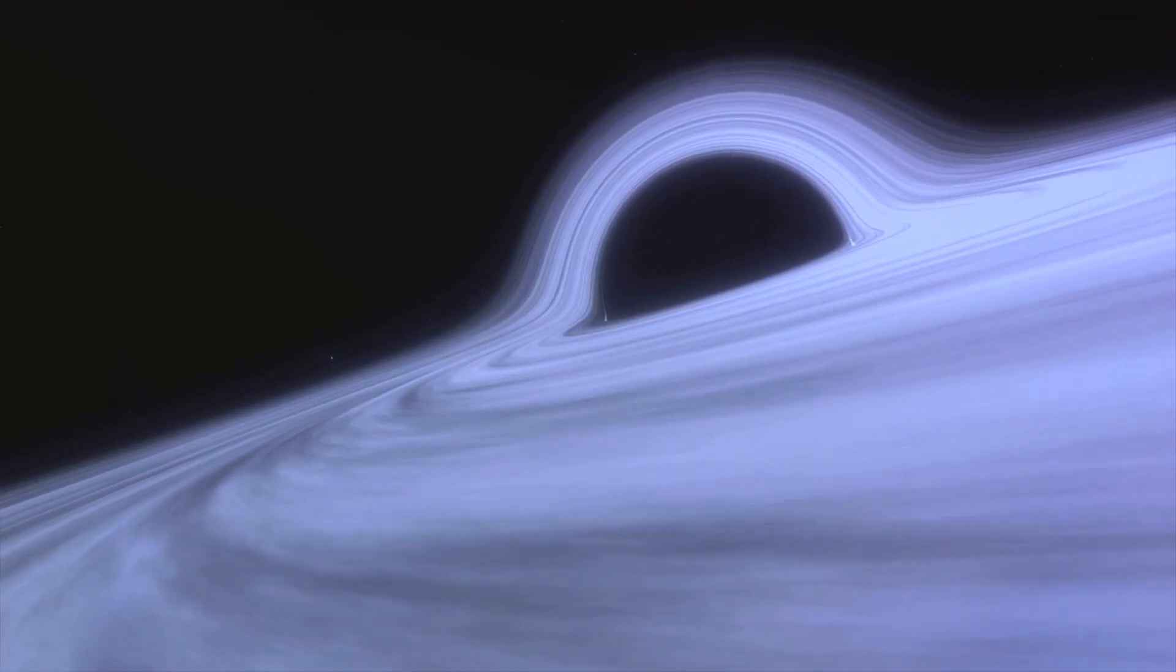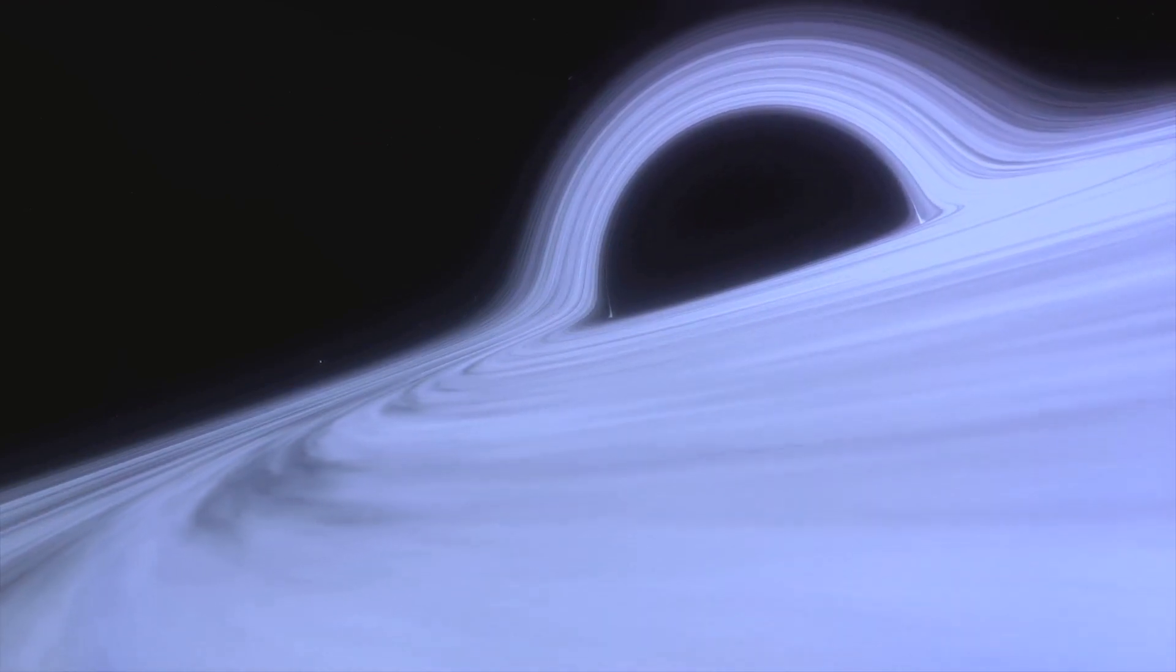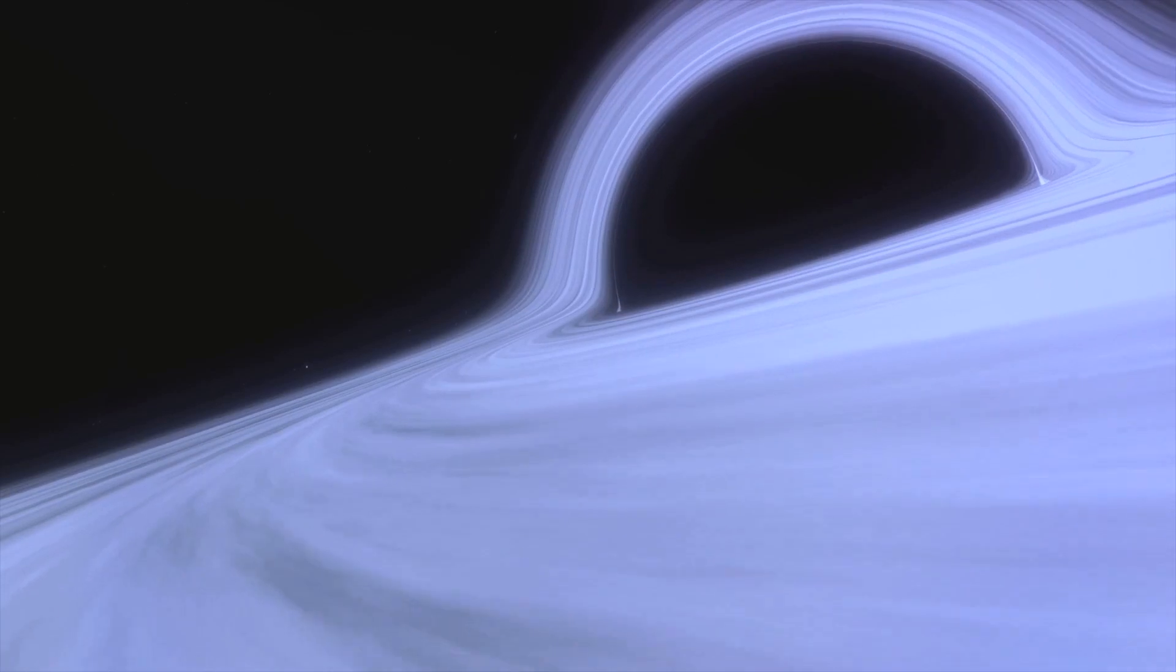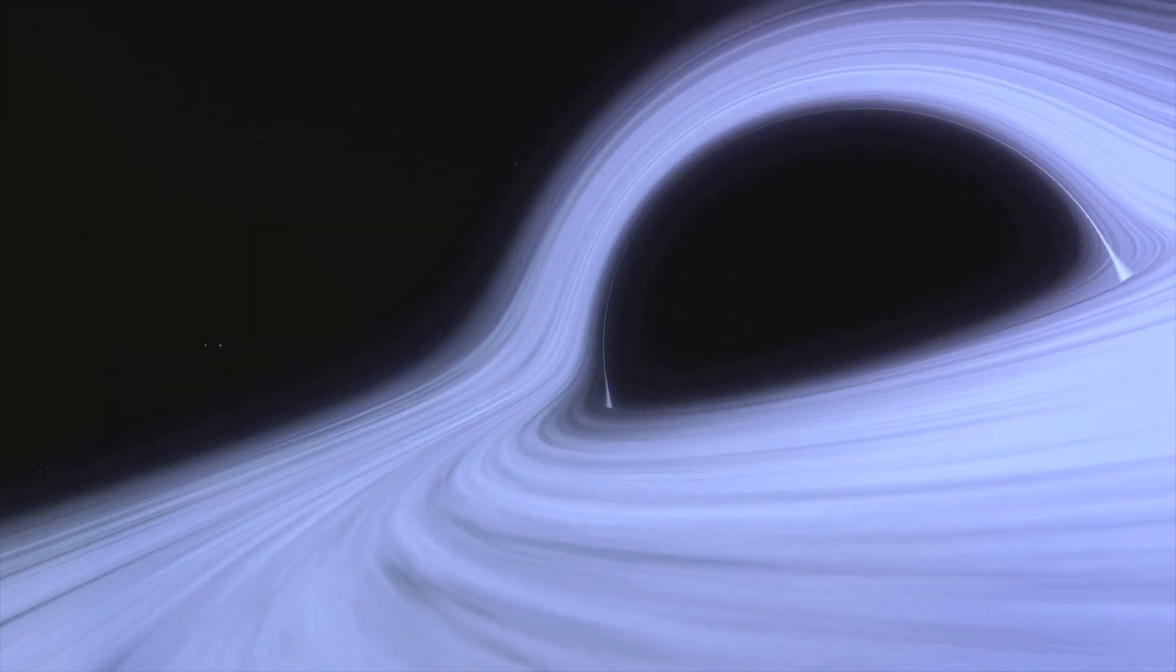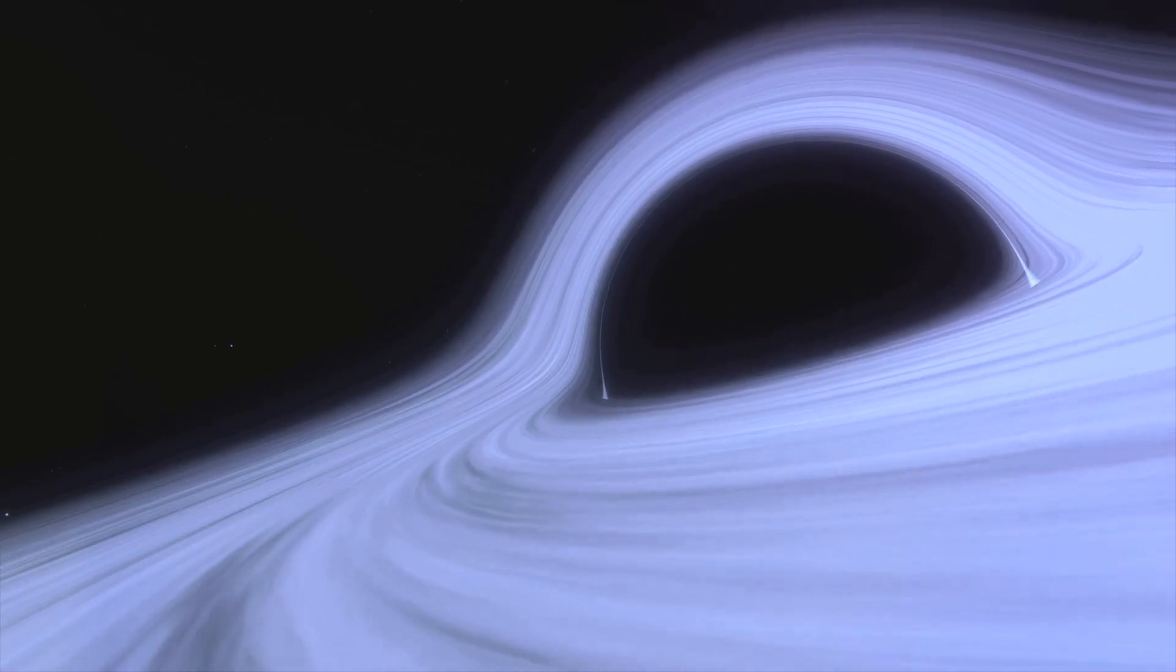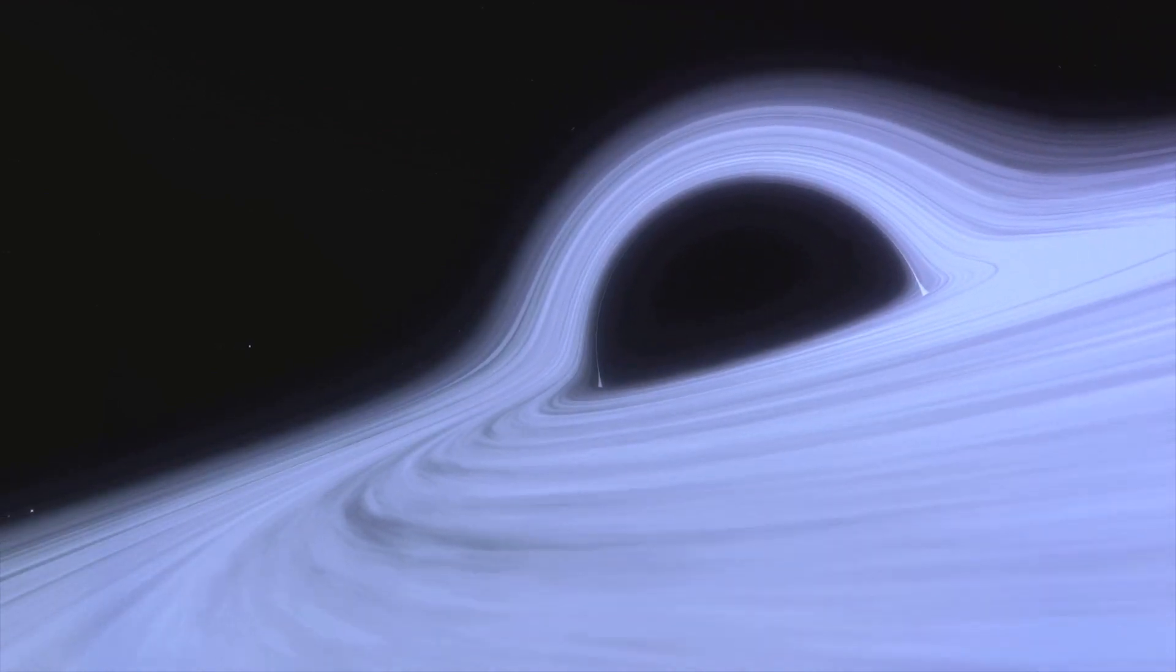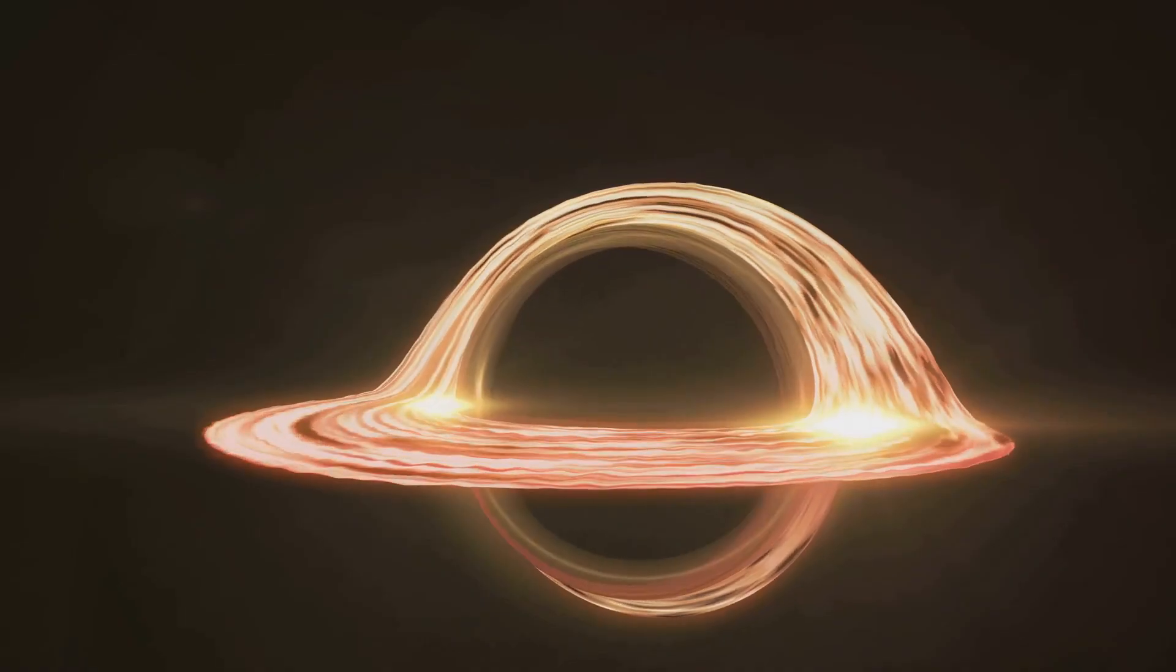The material in the accretion disk doesn't go gently into that dark night. Instead, it heats up, reaches high velocities, and emits a lot of energy in the form of light as it spirals inward. This is why we can observe black holes like Sagittarius A asterisk, even though the black hole itself is invisible. The energy and light emitted from the accretion disk act like a beacon in the dark, signposting the black hole's location.